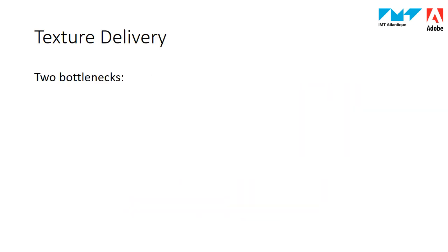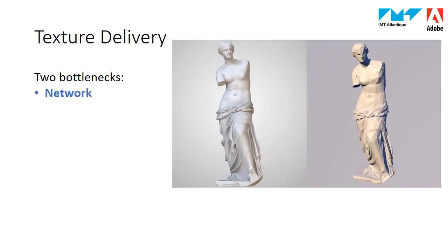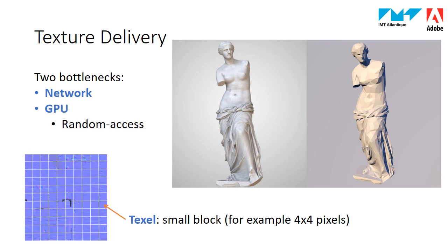When we look more closely at texture delivery, we identify two main bottlenecks. The first one is the network. The objects have to be delivered from a server to a client as fast as possible — for example, in augmented reality. The faster the object arrives with all details, the better, because we cannot wait too long with low quality objects if we want to offer good immersion in a photorealistic virtual environment. The second bottleneck is processing at the GPU. The game engine renders the scene by accessing small pieces of the image in the GPU. The main idea is to extract and process texels — small blocks of typically 4x4 pixels. When a ray of light reaches a location in the object, the GPU extracts the texels and computes how their reflections apply. This means that the texels should be accessed independently from each other. This is what we call the random access feature.